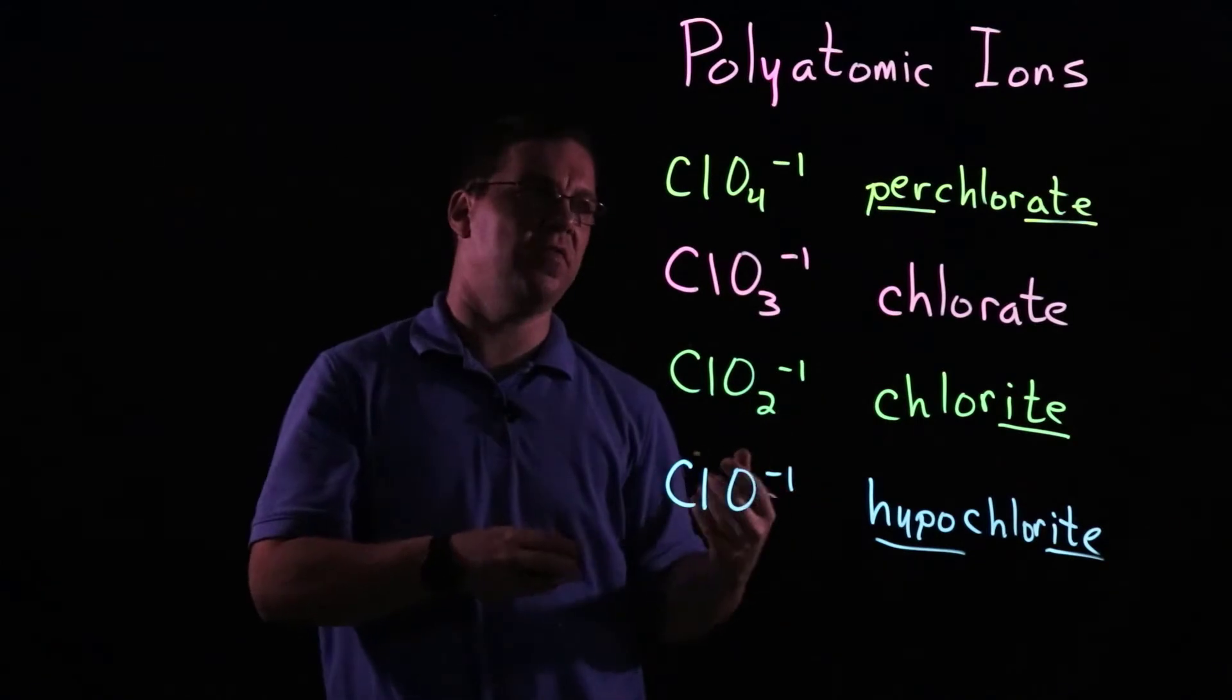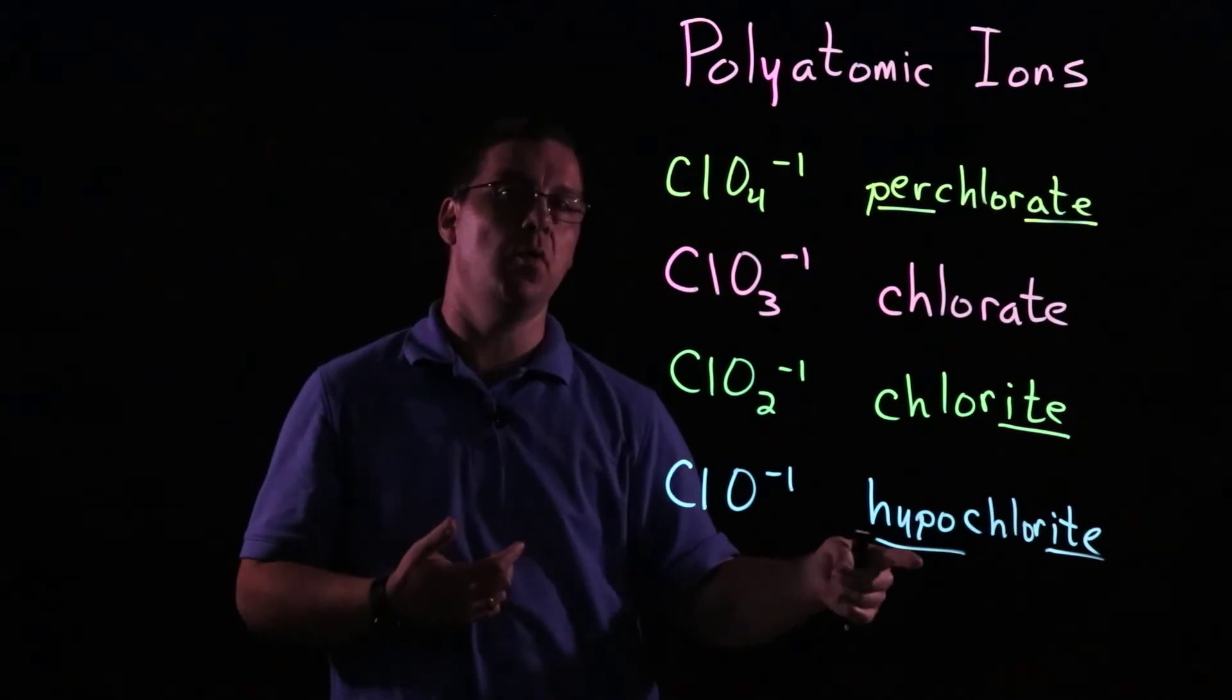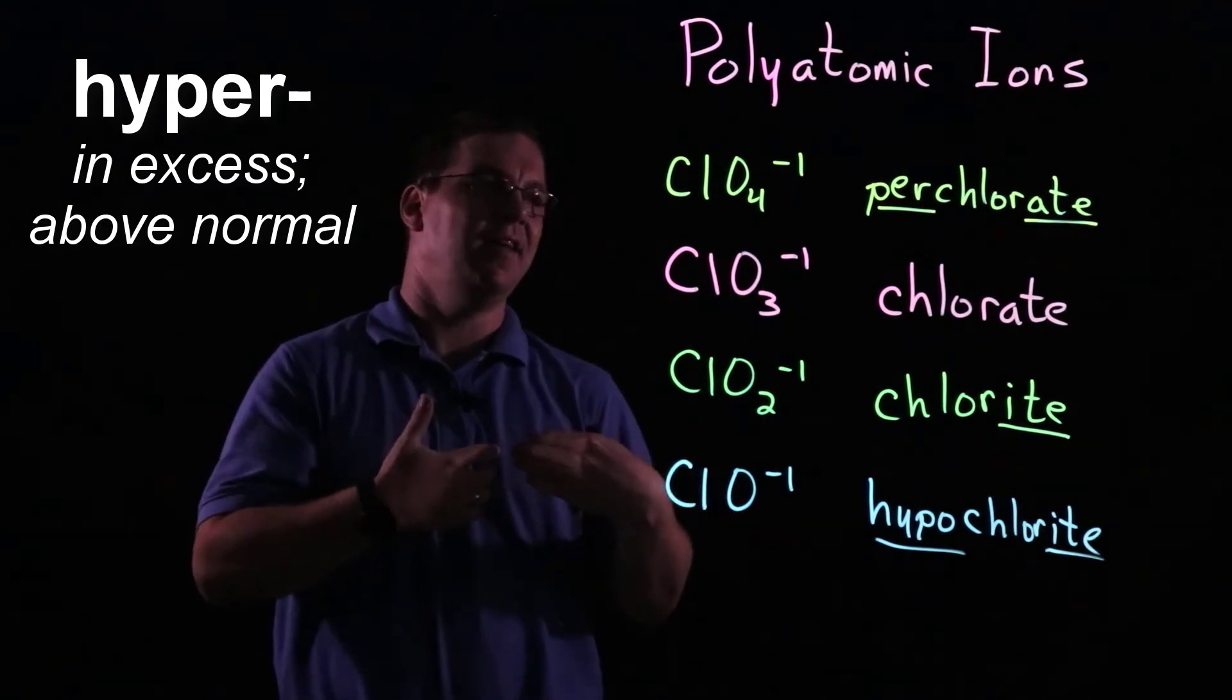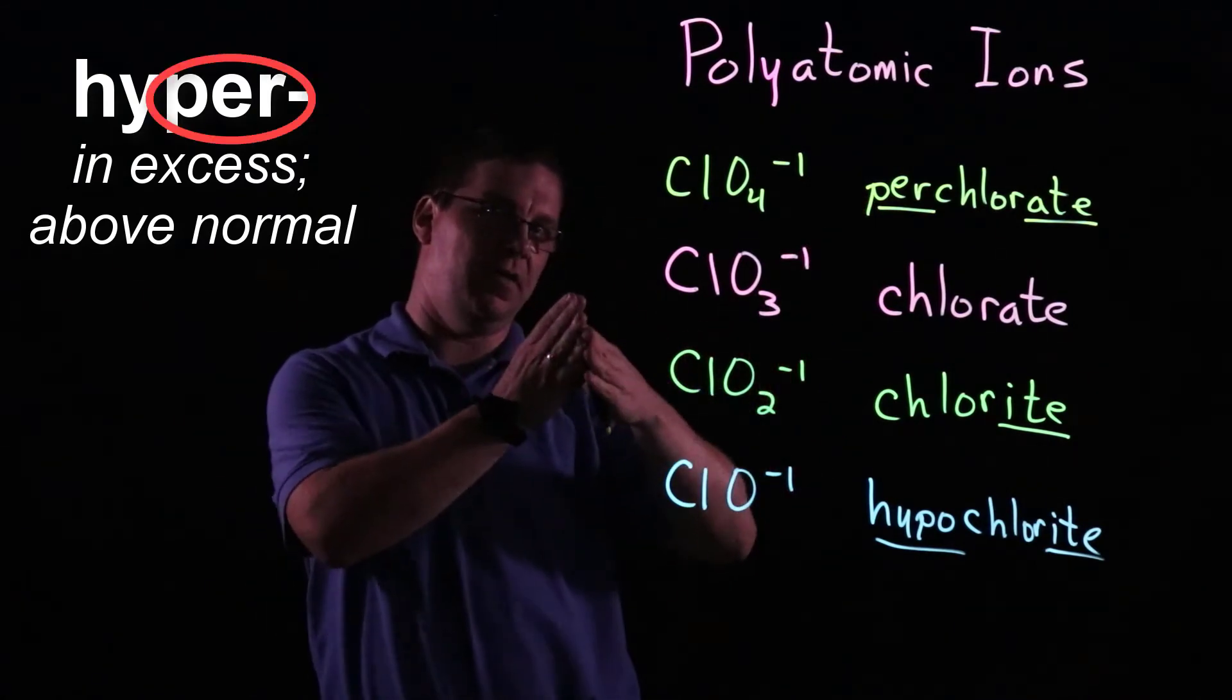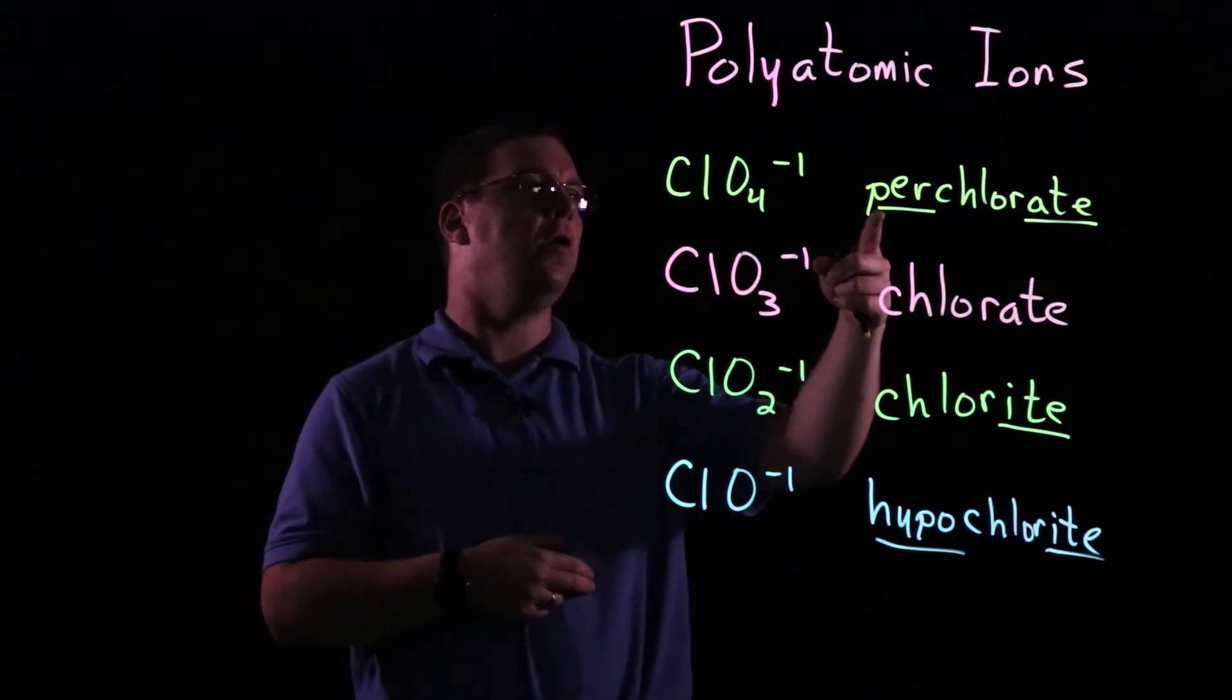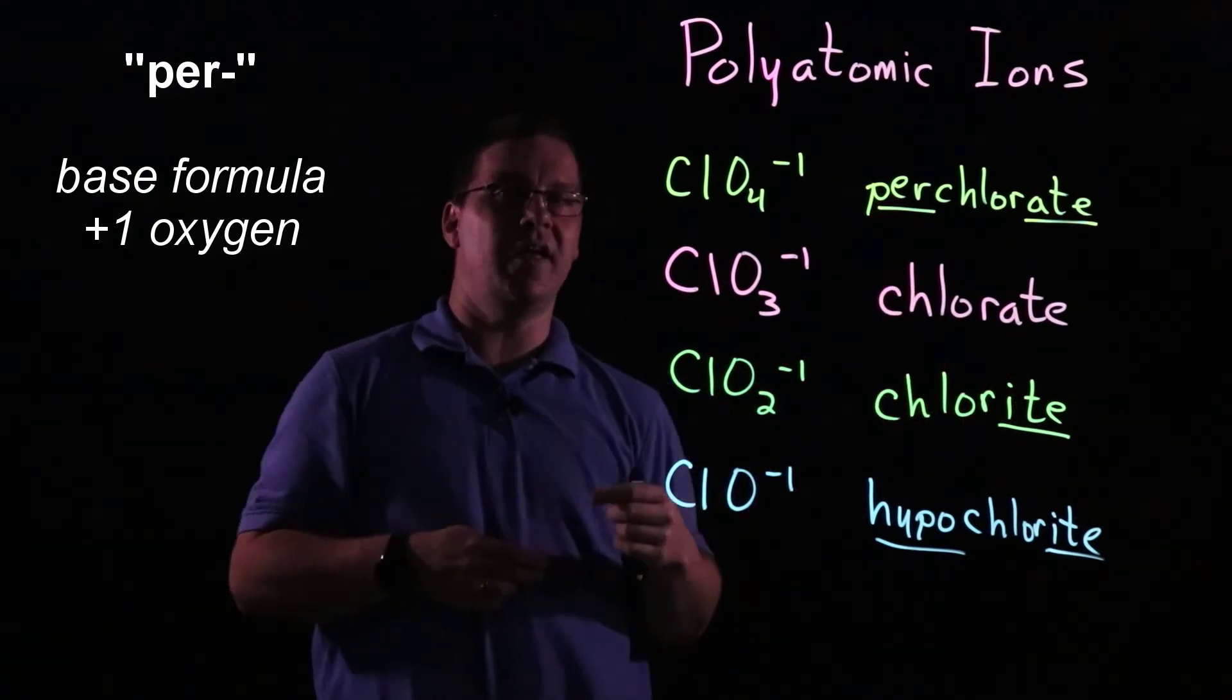And the per prefix actually comes from a root that is very similar to what hypo came from. If you think about the term hyper, if something is hyper, it means it's heightened, it's got more, it's got an excess of. And so per is actually the back end of that. So instead of saying hyperchlorate, it's just perchlorate. So whenever you see per tacked onto the front of the name, that's telling you you've got more oxygens than the common baseline form.